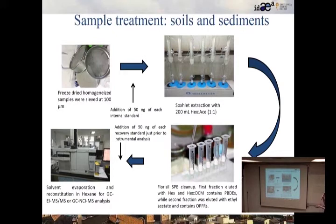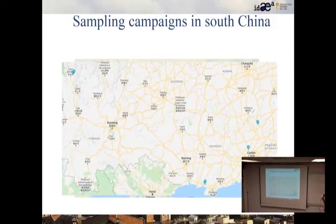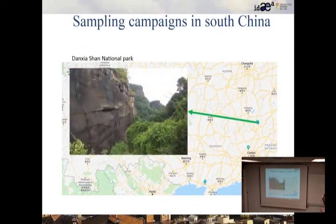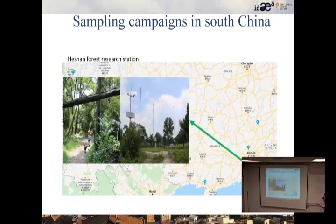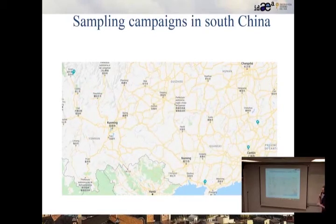The study focused on the south of China, in the provinces of Guangdong and Yunnan. Four areas were selected: two national parks, one nature reserve, and one forest research station. The first area is Danxia Shan. The second, near the Pearl River Delta — a huge population area — is the forest research station. The third is a mangrove forest. The fourth is Pudacuo Mountain National Park in Yunnan province at the beginning of the Tibetan Plateau.